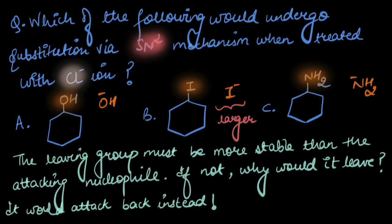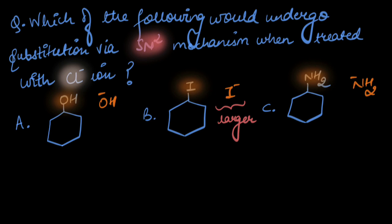So what we really need to compare is OH⁻ and Cl⁻, I⁻ and Cl⁻, and NH₂⁻ with Cl⁻. In the first case, Cl⁻ ion has a larger size, and therefore the larger the size of the ion, the more spread out the charge is, the more stable is the anion.